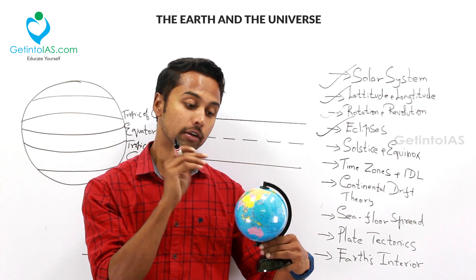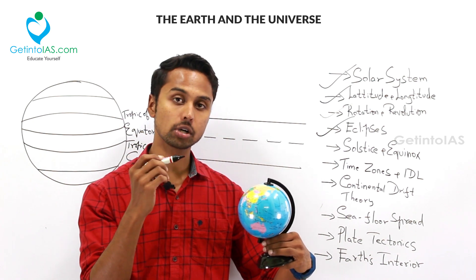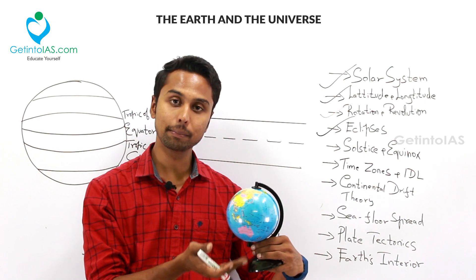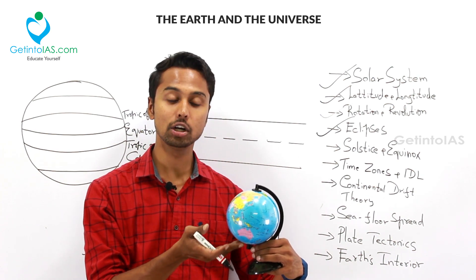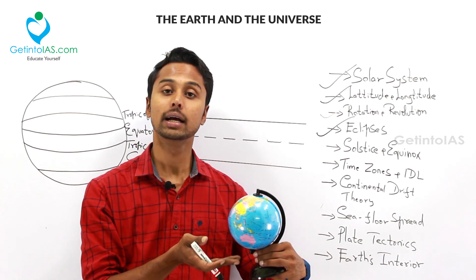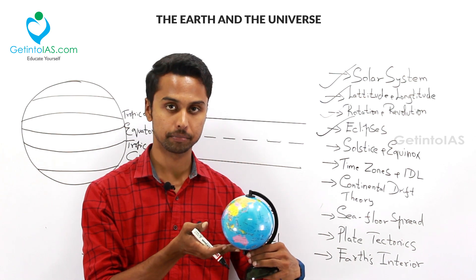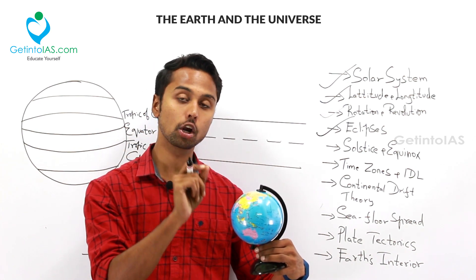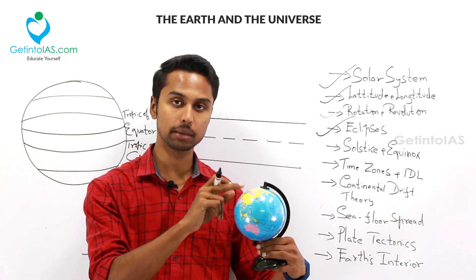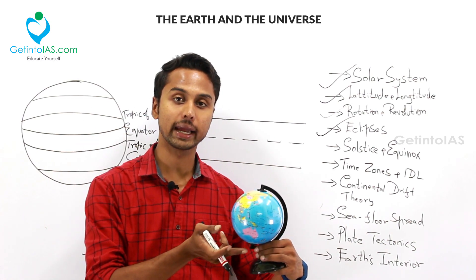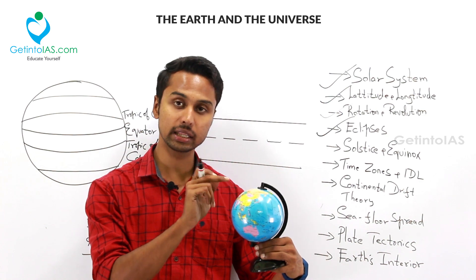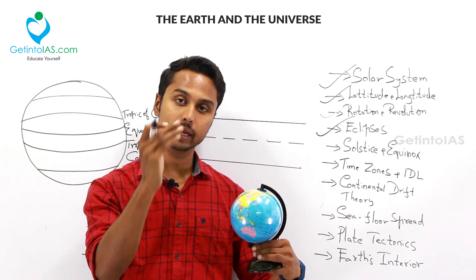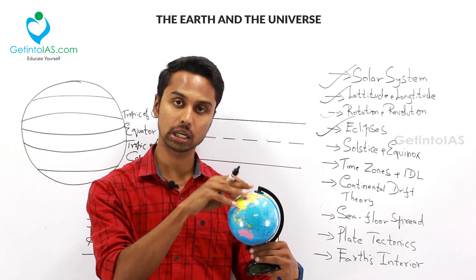When northern solstice is happening, the northern part will experience summer, and the southern part, which is in the darker side and does not receive as much sunlight, will experience winter. During northern solstice, you can experience the longest days and the shortest nights in the northern hemisphere.